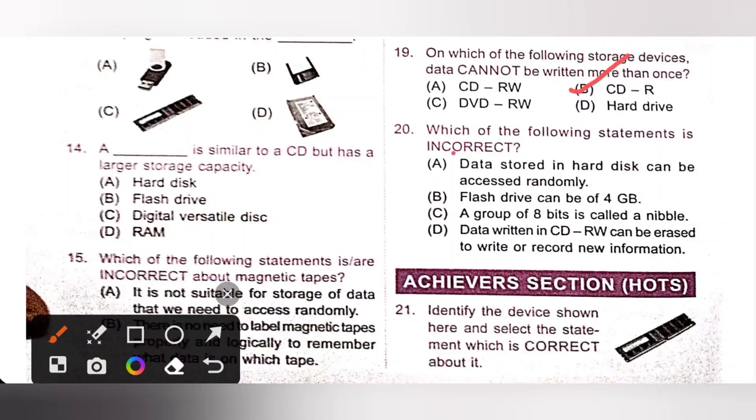20th. Which of the following statement is incorrect? We need to find the incorrect statement. Option A, data stored in hard disk can be accessed randomly. It is the correct statement. B, flash drive can be of 4GB. It is also correct statement. C, a group of 8 bits is called nibble. It is incorrect because a group of 8 bits is known as 1 byte, and a group of 4 bits is called nibble.